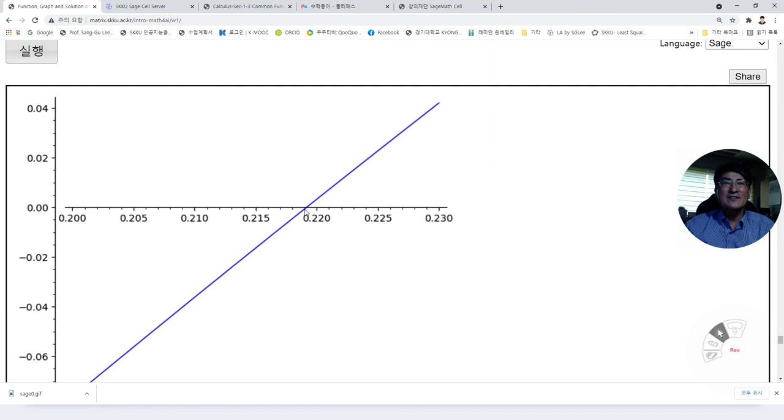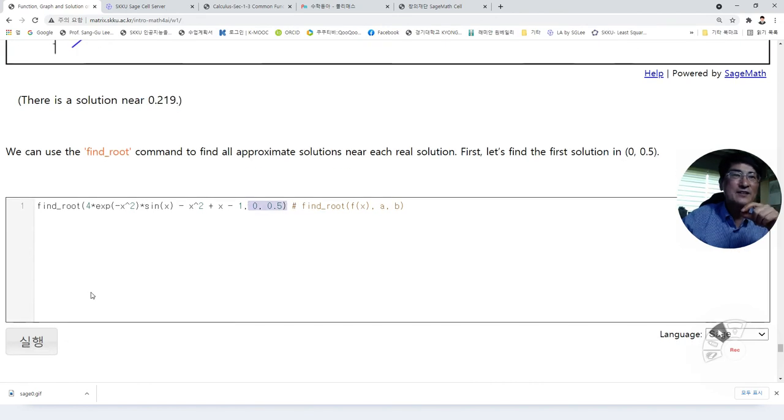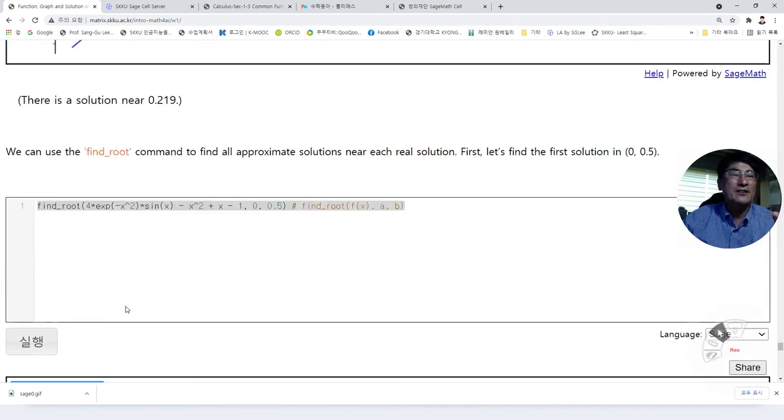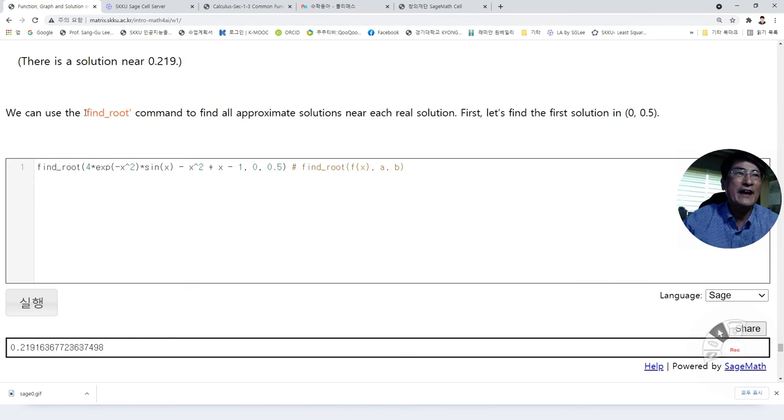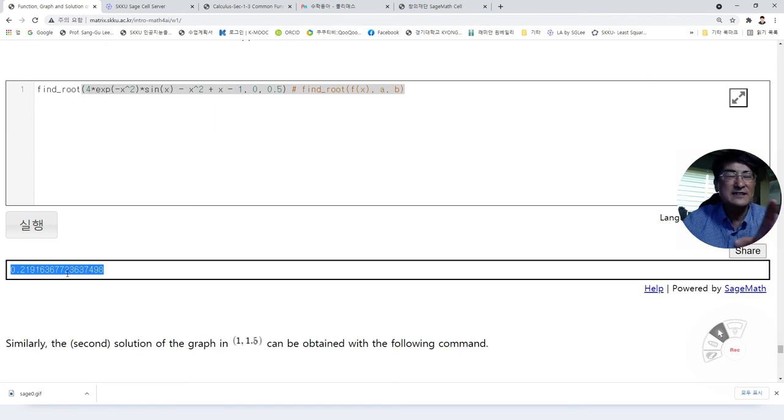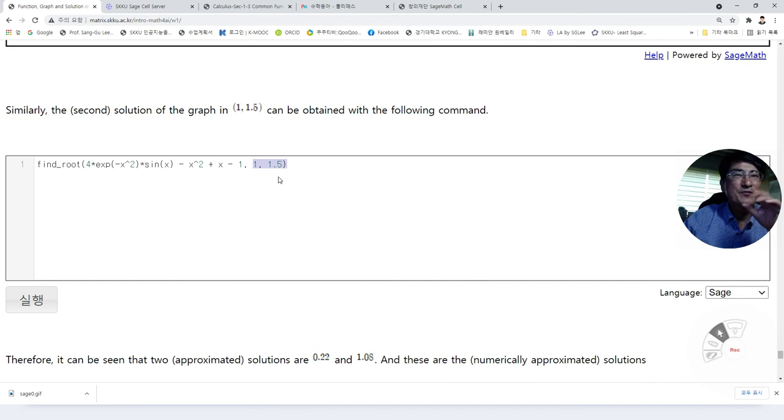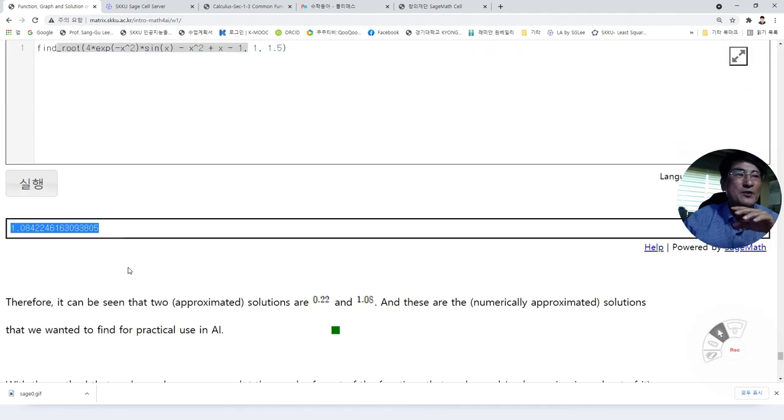And the next one is on this interval. Actually, we can find the solution in this way. The find_root command gives us the numerical solution. The second one, if you draw the graph from 1 to 1.5, then we have find_root command gives us 1.084 as the solution. So now we have two solutions, roughly. One is 0.22 and the other one is 1.08. If we want to have a more accurate one, then we can add one more command here to expand the digit.